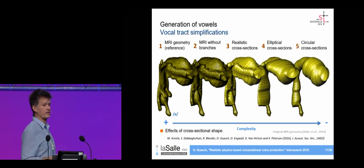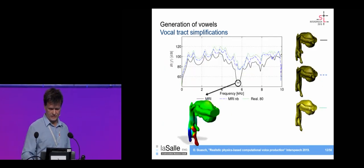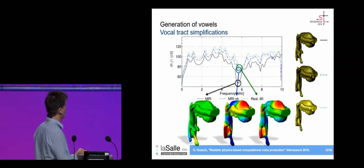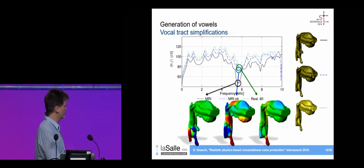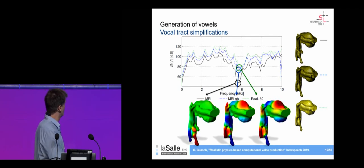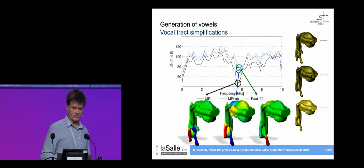We can also check the effects of simplifying the vocal tract geometry. For instance, if we remove the lateral cavities, the large dip near 6 kHz disappears and we get instead three-dimensional wave propagation. Going from a highly detailed model to a moderately simplified one makes some difference, but going from moderately simplified to very simple makes less of a difference.